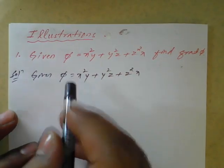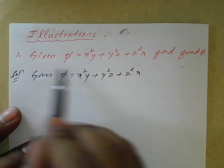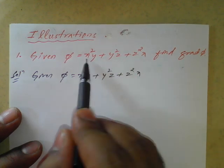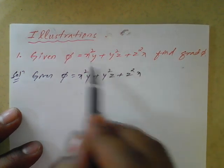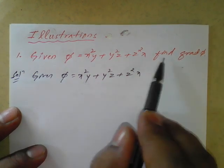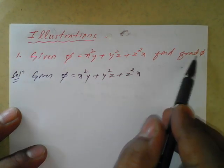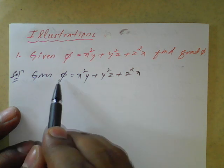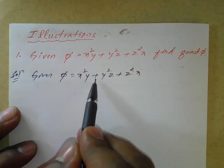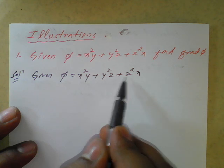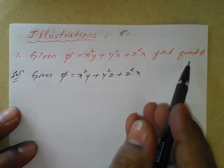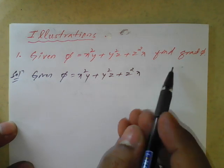Illustration. I have taken one example here. Given phi — phi is nothing but a scalar because you can see there is no i, j, k, only a quantity, that is a scalar magnitude. So find gradient of phi. Given phi is equal to x squared y plus y squared z plus z squared x. This is the value of phi. So we need to find gradient phi now.